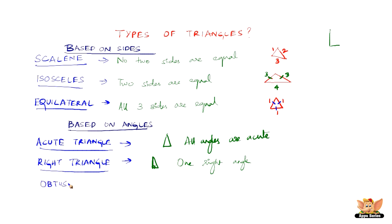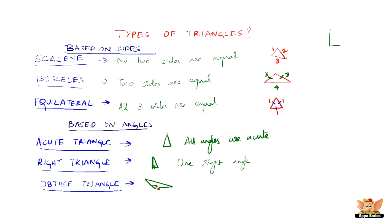The last one is called an obtuse triangle. An obtuse angle is greater than 90 degrees and less than 180 degrees. It does not mean all angles are obtuse — in fact, all angles cannot be obtuse since the sum of all three angles in a triangle is 180 degrees. A triangle which has one obtuse angle is called an obtuse triangle.